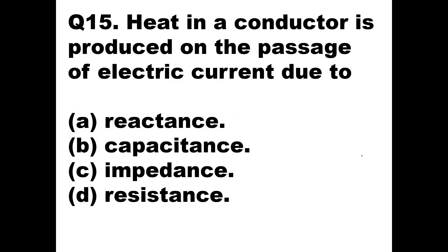Question 15: Heat in a conductor is produced on the passage of electric current due to — ? Whenever current passes through a resistance, it dissipates power and heat is generated. So heat in a conductor is produced due to resistance. Option D, resistance, is the right answer.